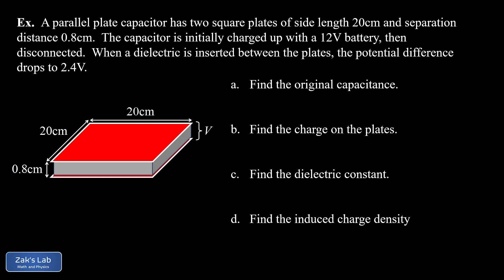We're told we have a parallel plate capacitor with two square plates of side length 20 centimeters and a separation distance of 0.8 centimeters. We initially charge it to 12 volts with a battery and then disconnect it. In the initial state there is no dielectric between those plates — just a vacuum. When we insert a dielectric material, the potential difference drops to 2.4 volts. With the capacitor disconnected from the battery, the total charge on the plates is fixed.